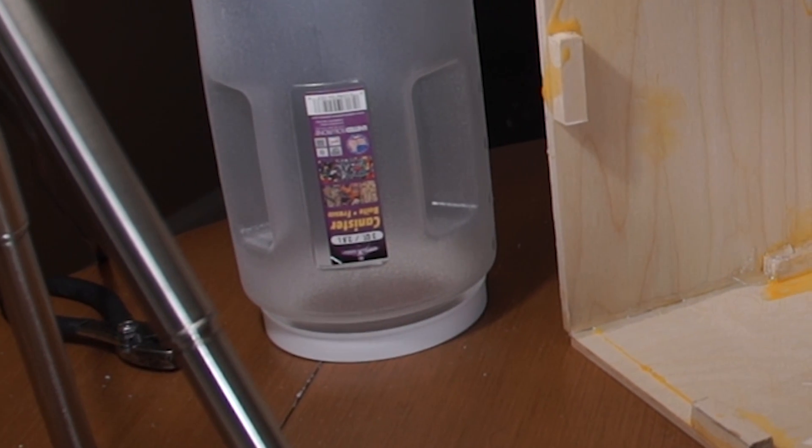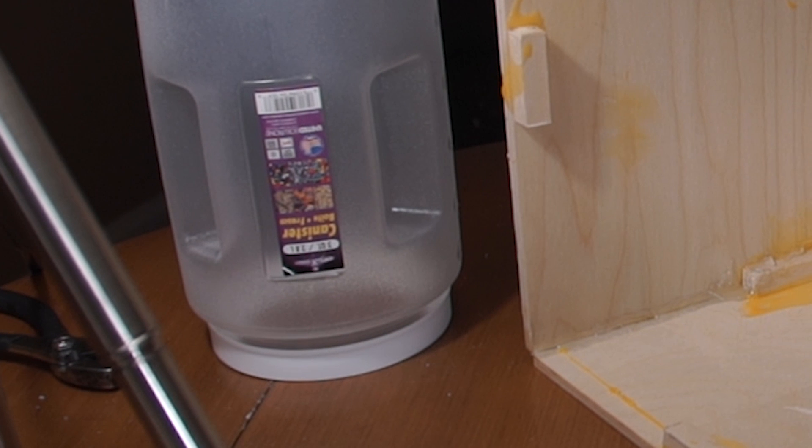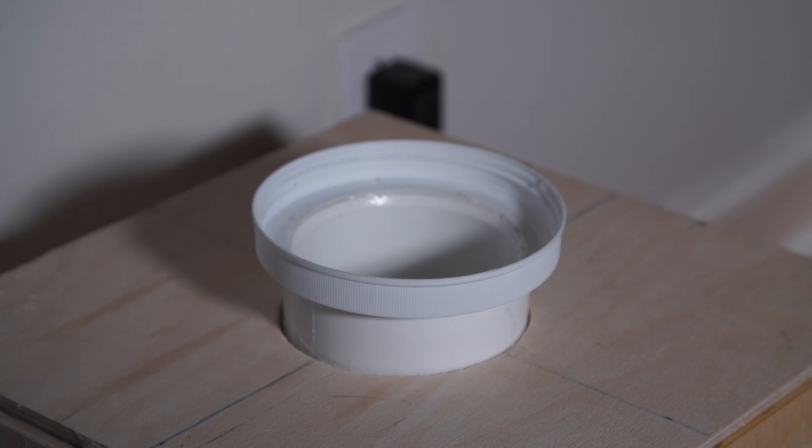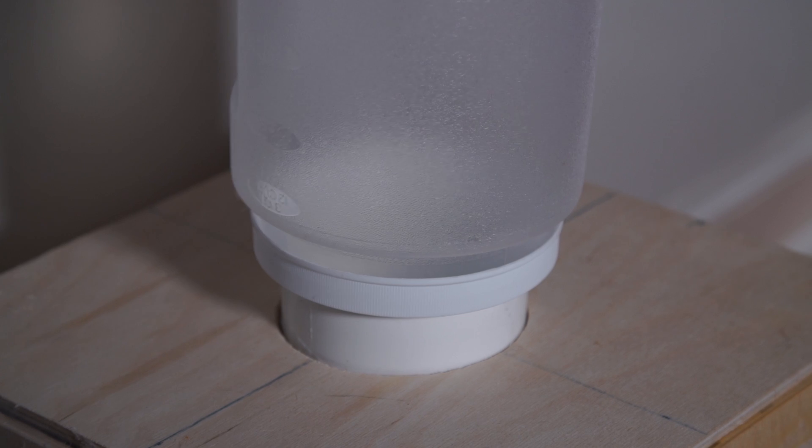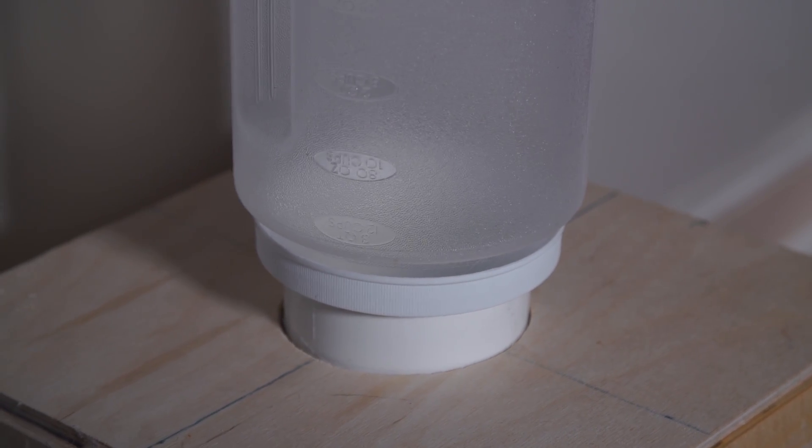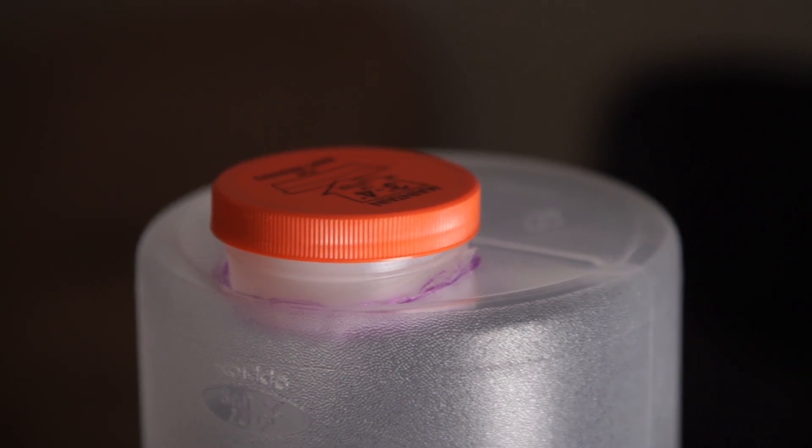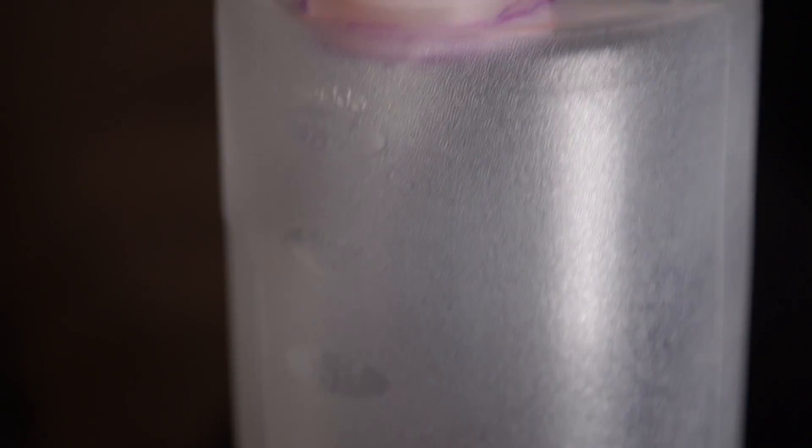I cut a hole in a 3 quart container's lid the same diameter as the PVC funnel and epoxied the top of the lid to the PVC. Let this dry and now the 3 quart container can be screwed on. I cut off the lid and threads from another container and just attached it to the top using epoxy for easy filling.